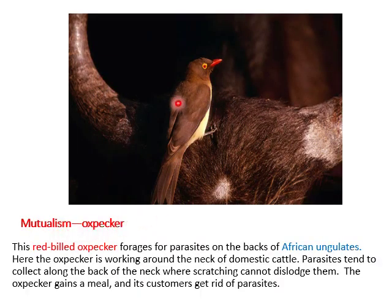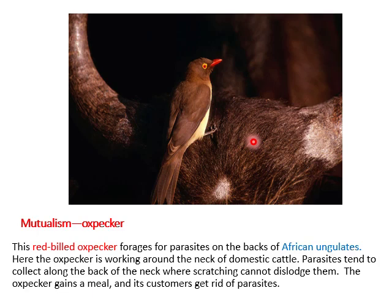Another example of mutualism is the ox pecker. This red-billed ox pecker forages for parasites on the back of African ungulates, working around the neck of domestic cattle. Parasites tend to collect along the back of the neck where scratching cannot dislodge them. The ox pecker gains a meal and its host gets rid of parasites.